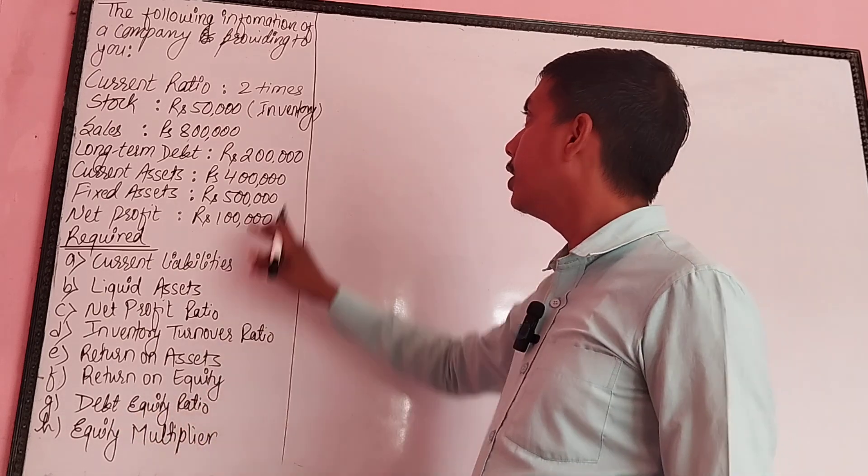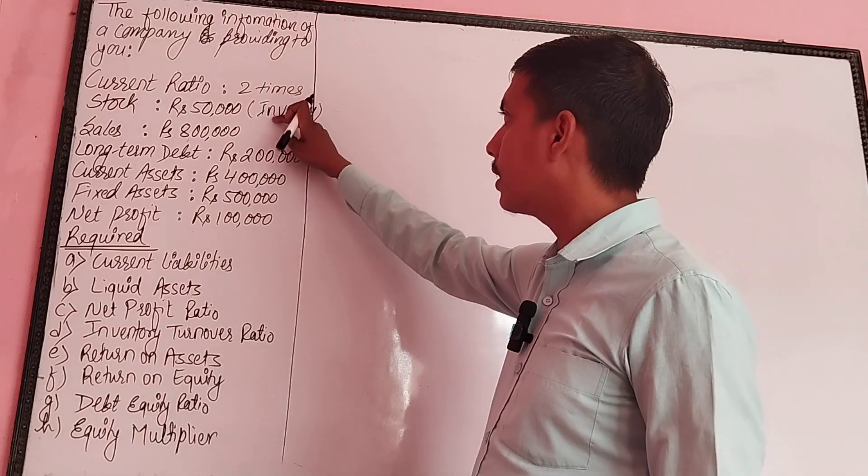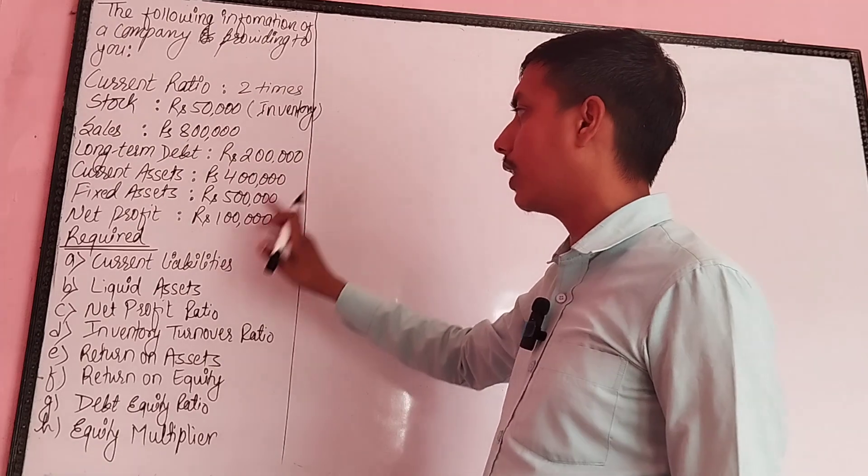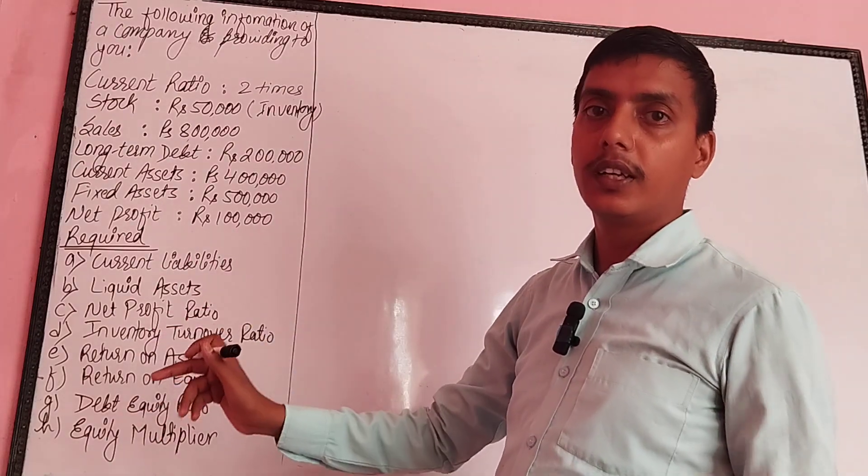Equity multiplier. The information given is: 1, 2, 3, 4, 5, 6, 7 — and information number 7 is 100.